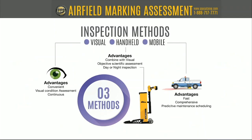There are three primary inspection methods: visual, handheld, and mobile. Starting with visual — the advantages are that it's convenient, and pretty much anyone with knowledge or a trained eye can look at that marking. It's also a visual condition assessment that goes beyond just looking. You can get down on your hands and knees, take a closer look at a line, and try to figure out what might be causing a problem — is it adhering right? You can do a real good condition assessment that you really can't do with machines.